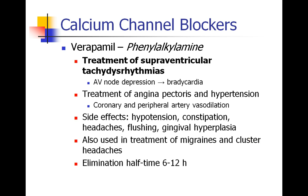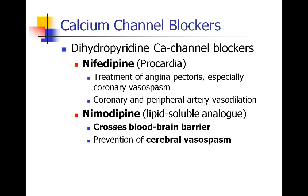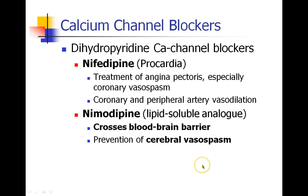Those are the two heart rate-specific calcium channel blockers. Now let's talk about the vasculature-specific calcium channel blockers — the dihydropyridines — which really treat hypertension and related conditions. Specific drugs include nifedipine (Procardia), which treats angina including coronary vasospasm, and vasodilates both coronary and peripheral arteries. Nimodipine is lipid-soluble, so it can cross the blood-brain barrier — making it a good drug for patients at risk of cerebral vasospasm, such as those who've had an intracranial hemorrhage and are being observed in the hospital to prevent cerebral vasospasm.